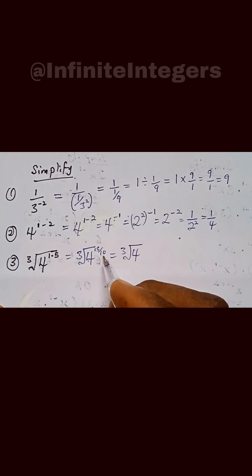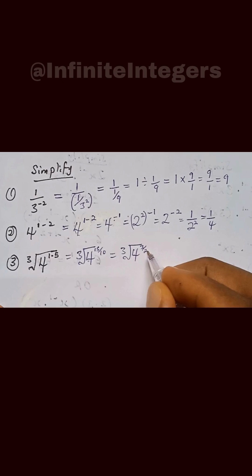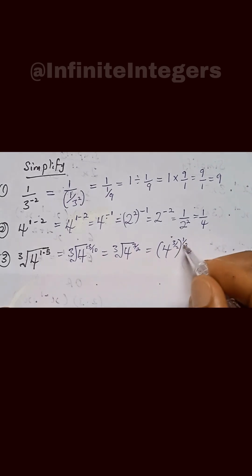We can then write this as 4 raised to power 3 over 2, then power 1 over 3. Now we multiply the powers: 4 raised to power 3 over 2 multiplied by 1 over 3. The 3s cancel out.